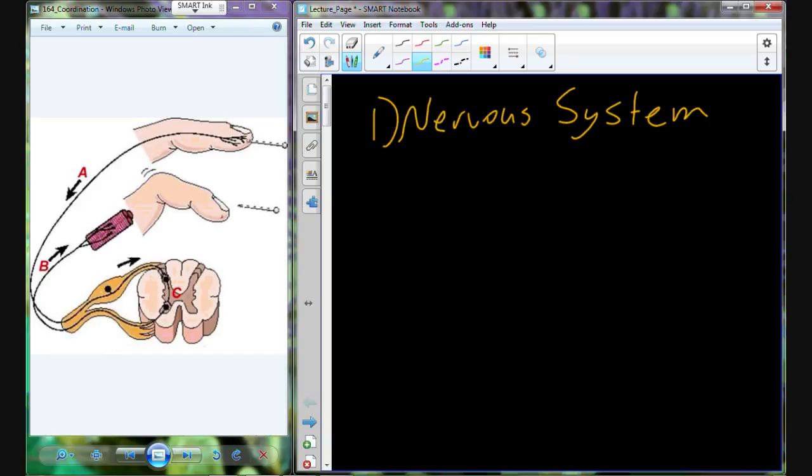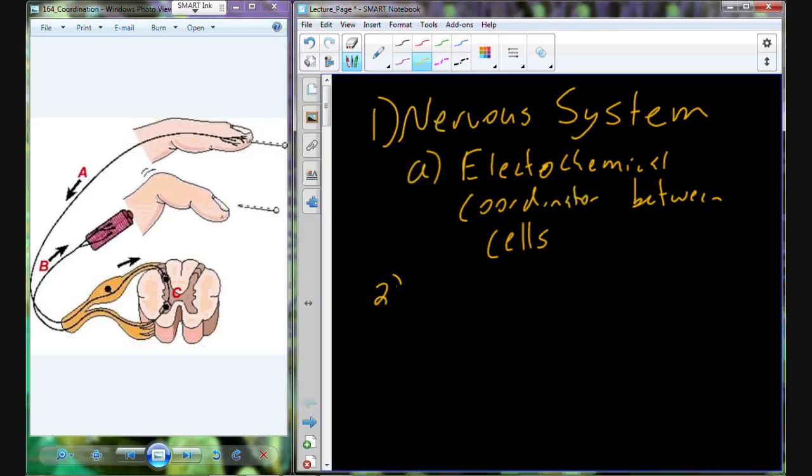All right, so the nervous system. The nervous system is the electrochemical coordinator between cells. Basically, this is the system that is going to help to regulate many of the other systems and help to coordinate activity and homeostatic variables to maintain conditions that are conducive for life.